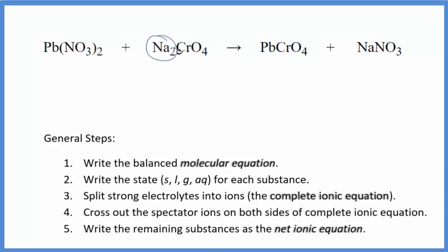There are two sodium atoms here and just one here. Let's put a 2 in front of the sodium nitrate. That gives us two sodium atoms, two nitrates. We have two nitrates here already. We have the chromate ion right here and right here, and one lead, one lead. So that's the balanced molecular equation.